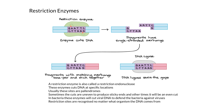Sometimes the cuts are uneven, and when they're uneven, it's called a sticky end. Other times the enzyme can cut right down the middle, producing what we call a blunt end. Sticky ends are more useful because they can attach at the specific sequence you want, while blunt ends are harder to attach back together.